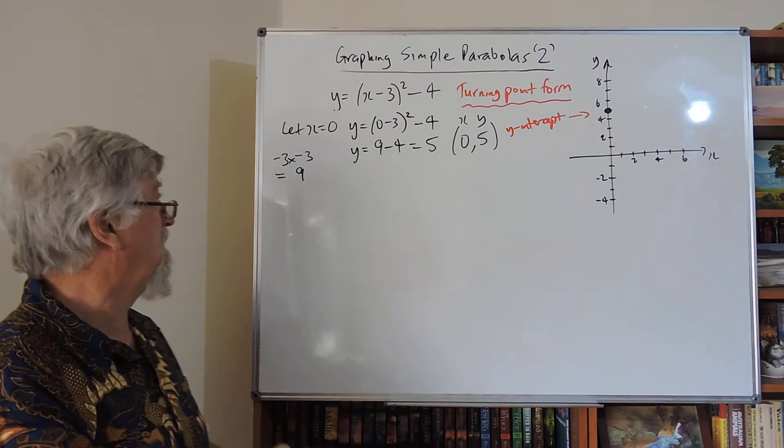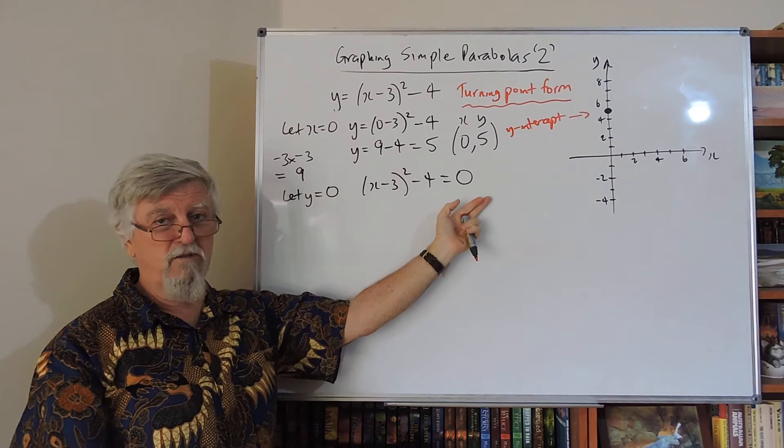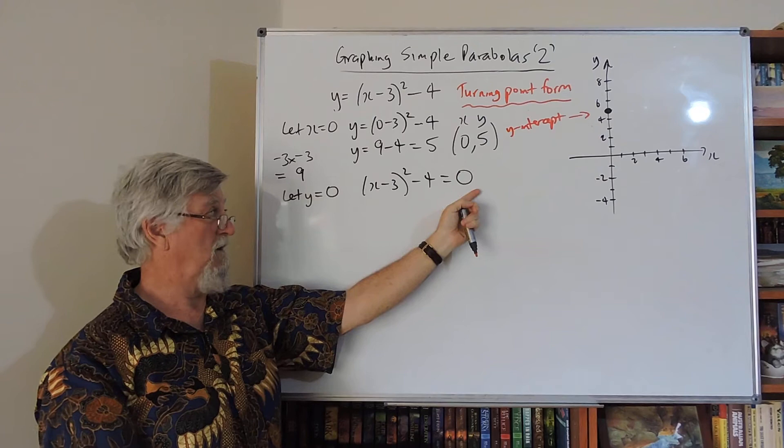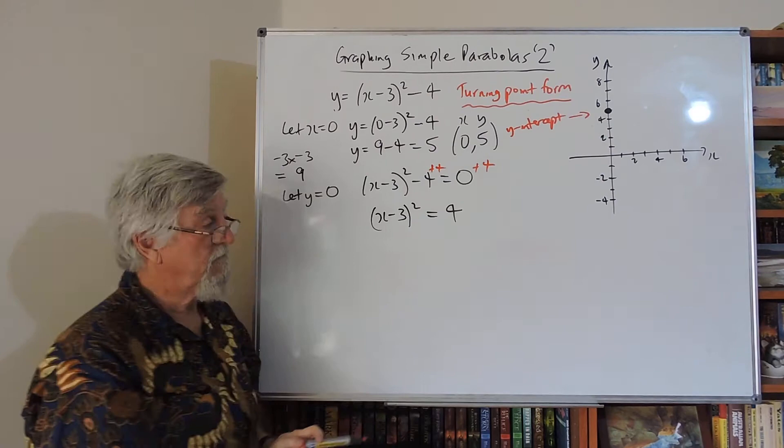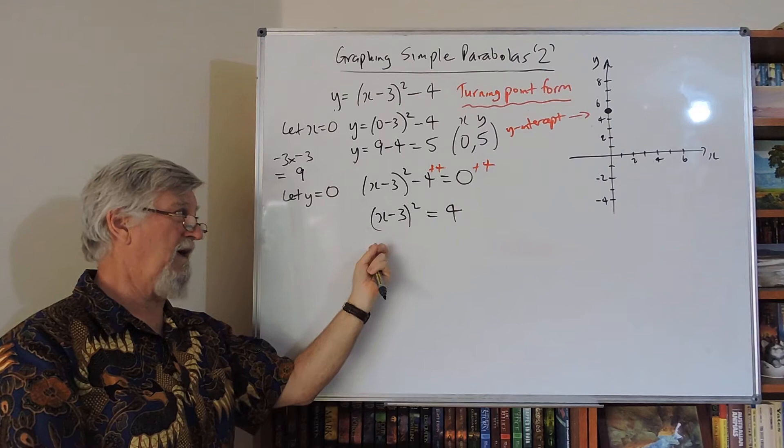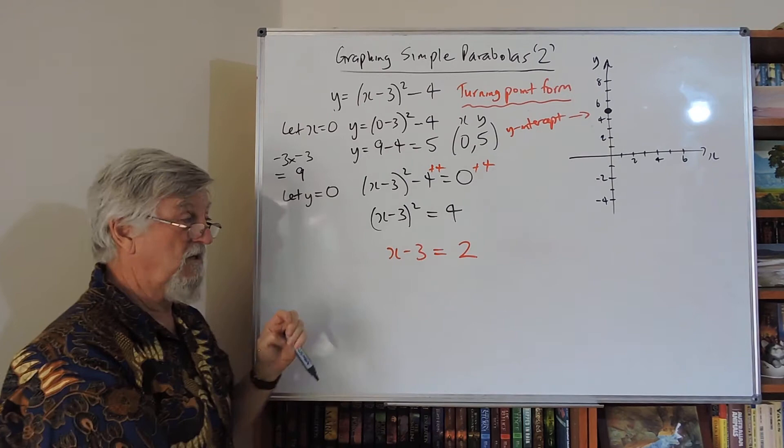Now if I let y equal 0, I'll go x minus 3 squared minus 4 equals 0. I put 0 on the right, normal tradition for most things. So instead of putting the 0 here, I'm putting it over on the right-hand side. How do I get rid of the minus 4? I add 4 to this side, I add 4 to that side, and I'm left with x minus 3 squared equals 4. How do I get rid of the squared so I can get the x by itself? If I get the square root of this side, I end up with x minus 3, then I've got to go to the square root of that side, which is 2. The trouble is there are two possibilities.